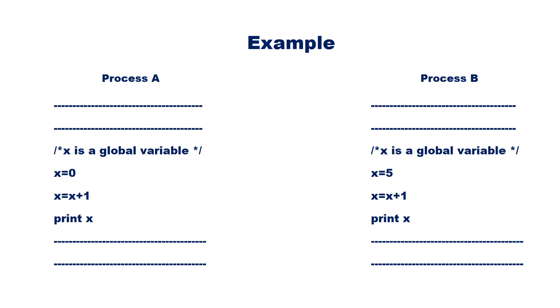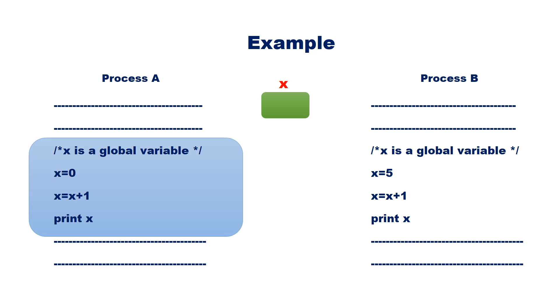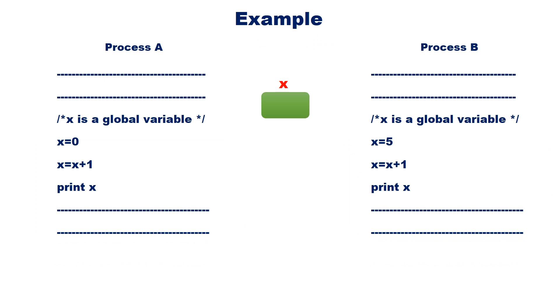Let us now discuss about the critical section problem. A critical section is a part of the program that accesses shared resources. Assume that we have two processes, Process A and Process B. X is a global variable that can be accessed by both Process A and B. The section of the code that accesses the global variable X is the critical section for Process A and the critical section for Process B.